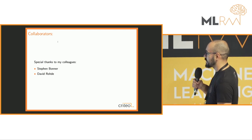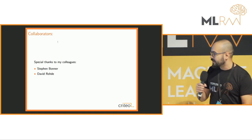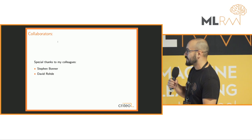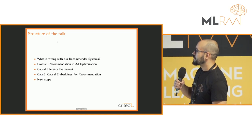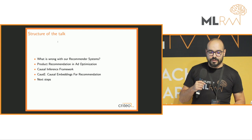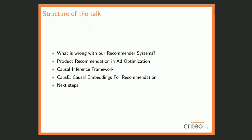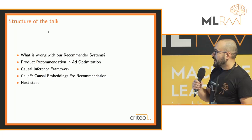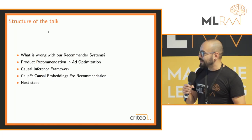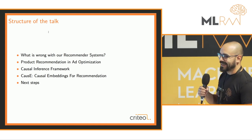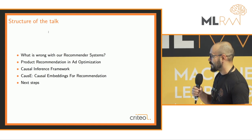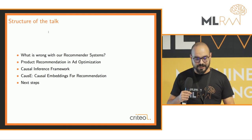First, a special thanks to my colleagues Steven Bonner and David Rohde. Most of this work has been done in collaboration with the two. The structure of the talk is the following: I'll start with what is wrong with our recommender systems as they are now, then focus on product recommendation and ad optimization at Criteo, introduce the causal inference framework, talk about our method, and conclude with some next steps.